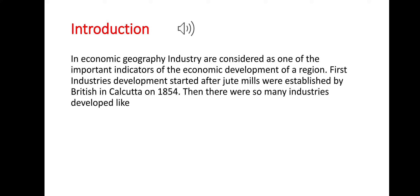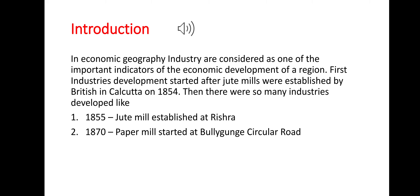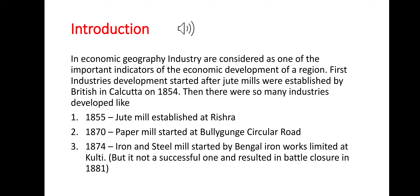The first industries started after jute mills were established by the British in Calcutta in 1854. Many industries were established: jute mills at Rishra in 1855, paper mills at Bali on the Circular Road in 1870, and iron and steel works started by Bengal Iron Works Limited at Kulti in 1874. However, it was not successful and resulted in its closure in 1881.